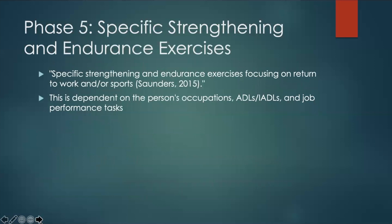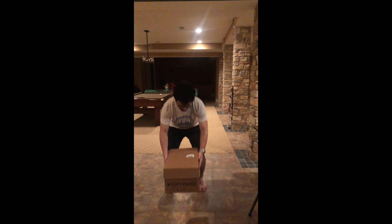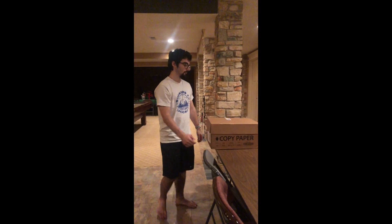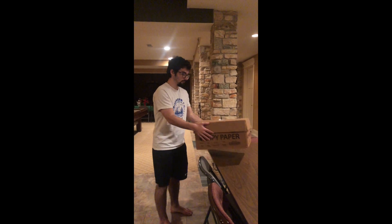The fifth phase is the last phase of the intervention process for a rotator cuff injury. This phase incorporates strengthening and endurance exercises that are individualized for the client to help them return to specific occupational work or athletic activities. An example may be an individual who works in a warehouse and lifts boxes consistently throughout the day. This client would partake in a work-hardening program in which safe body mechanics are taught to help the individual return to work and carry out the given occupation safely.